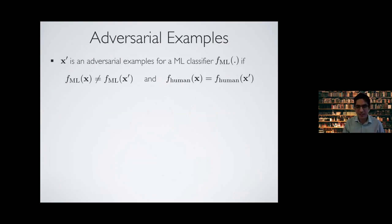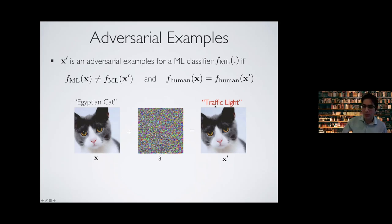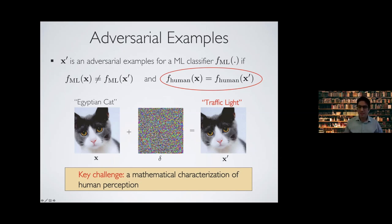We say X' is an adversarial example for a machine learning classifier if that classifier outputs different labels for X and X' while humans would classify X and X' the same way. Our classifier correctly classifies X as an Egyptian cat, but if we adversarially perturb X to obtain X', it will mislead the classifier to output a traffic light label while humans would classify X and X' the same way. That's why we call X' an adversarial example. The key challenge here is that we don't have a good mathematical characterization of human perception, which is very important in the definition of adversarial examples.